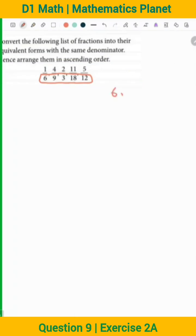So we can write 6, 9, 3, 18, 12. These are all of the denominators. So let's find the LCM. 3 times 2 is 6, 3 is 9, 1 is 3, 6 is 18, and 3 times 4 is 12, right?